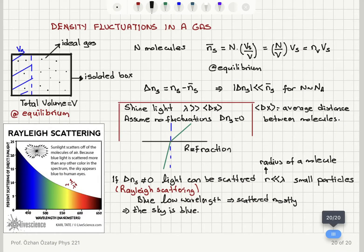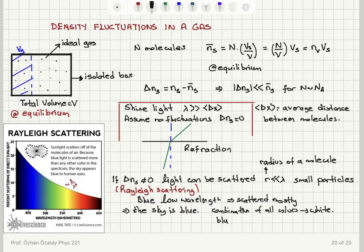There's going to be the combination of all the colors as well, which gives you white, but then you have the highest intensity in the blue portion, so it's going to be a bluish-white color. This is basically going to happen mostly in the upper portion of the atmosphere, where you have a higher distance between the molecules. When we reach the lower portion of the atmosphere where the molecules are denser, we're going to see refraction.